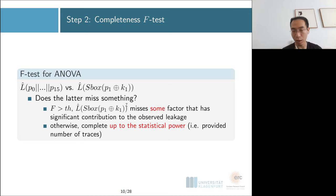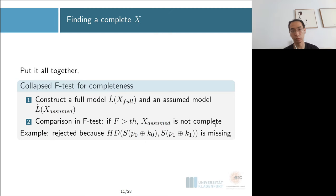Put it together: to verify whether your assumption is correct, we can construct a full model and the assumed model based on your assumption, then compare these two models in the F-test. If the F statistic is larger than some threshold, we say your model is not complete. For the trivial example I mentioned, it will be rejected because your model misses the Hamming distance term.